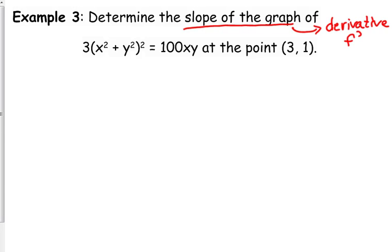So, f prime, y prime, whatever you want to call it. Sometimes they do give you a question that says the slope of the graph is given by this function - they already gave you the derivative, but this one doesn't. At the point (3, 1), we need implicit differentiation because x's and y's cannot be separated. So let's do this.